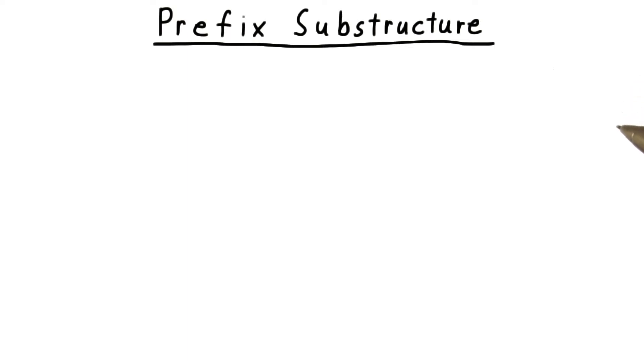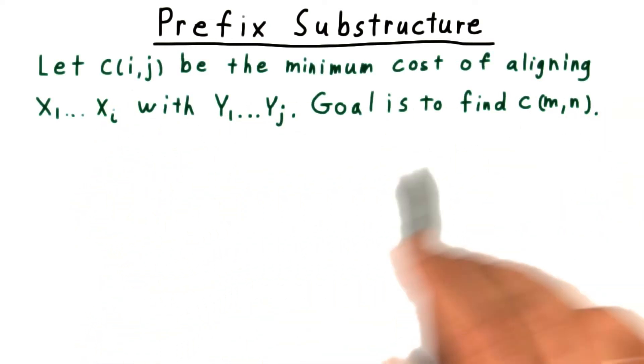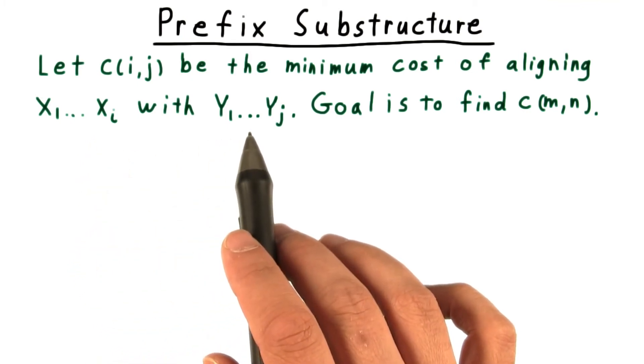The key optimal substructure for the sequence alignment problem comes from aligning prefixes of the sequences that we want to align. We define C(i,j) to be the minimum cost of aligning the first i characters of x with the first j characters of y.